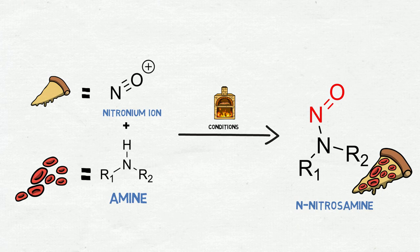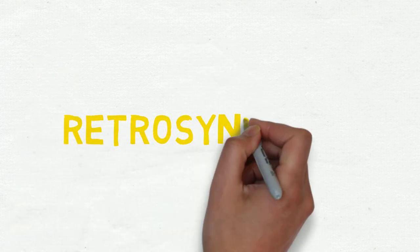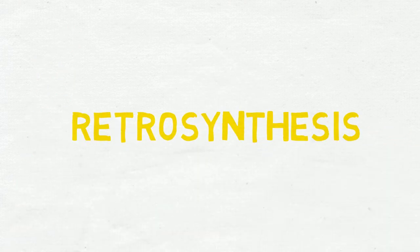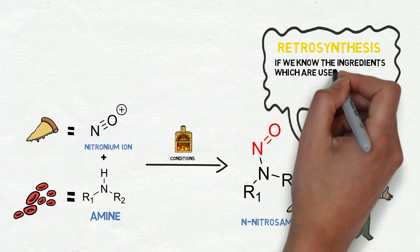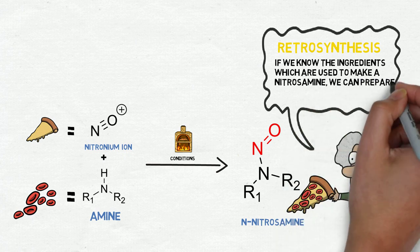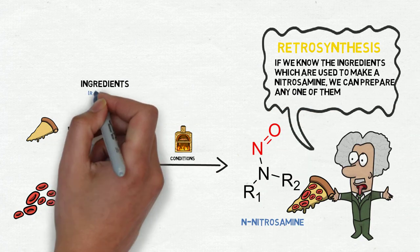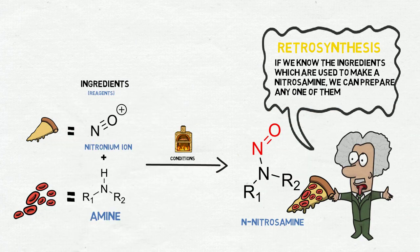It's very simple and easy to understand if you compare it with a pizza. That's how we should think about retrosynthesis, to use this concept to identify any potential nitrosamine from our process. You just have to know what is the base, the nitronium ion source, and the topping, all the amines. And you have to put both in the oven. I mean, in the right condition.